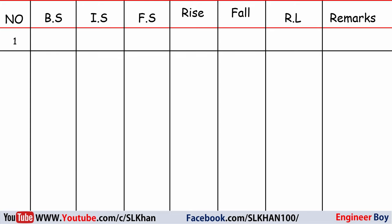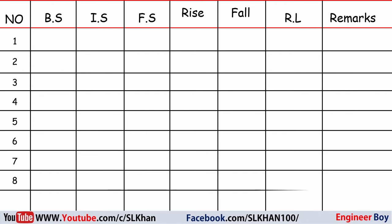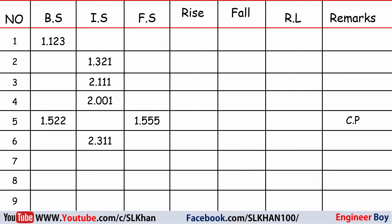When you get the staff readings at each point, you place those values in the table in the form of backsight, intersite, and foresight. The backsight is 1.123, then the intermediate sight readings, and then the foresight — which is the last reading taken before the change point (CP). You must be familiar with these terms in order to solve the Rise and Fall table.